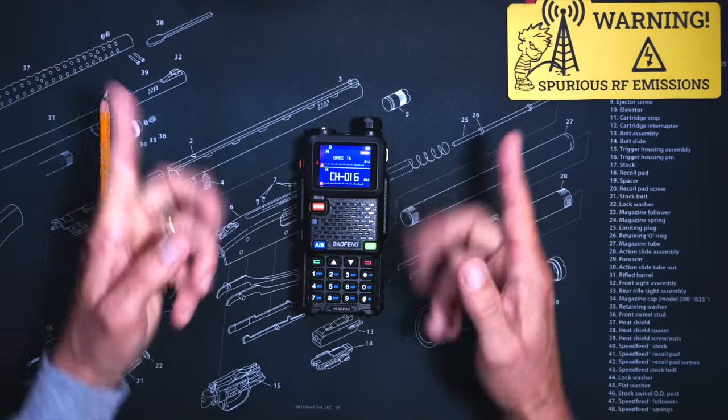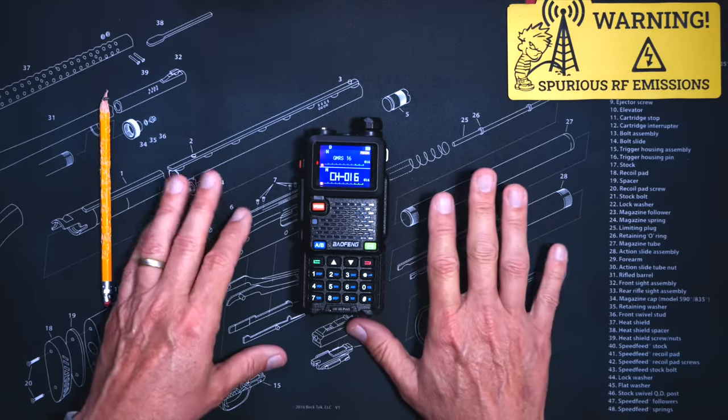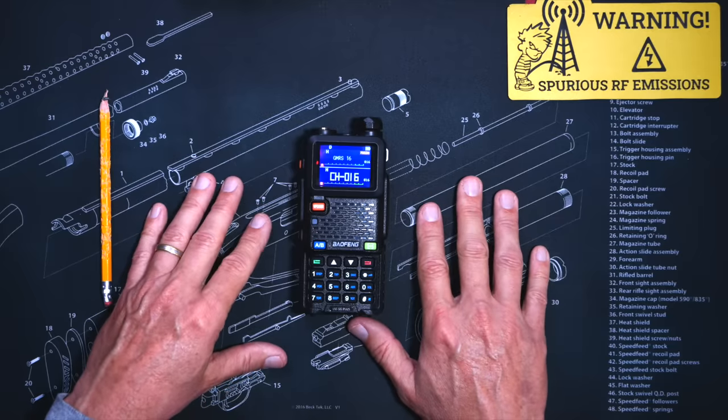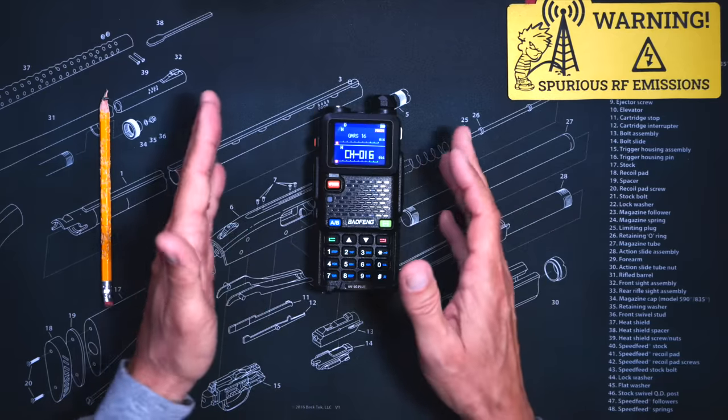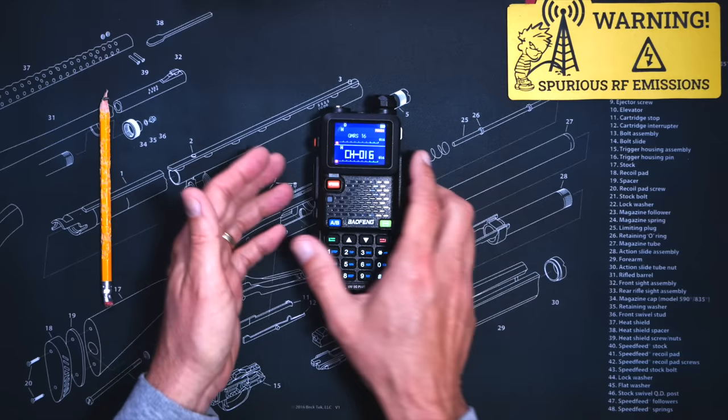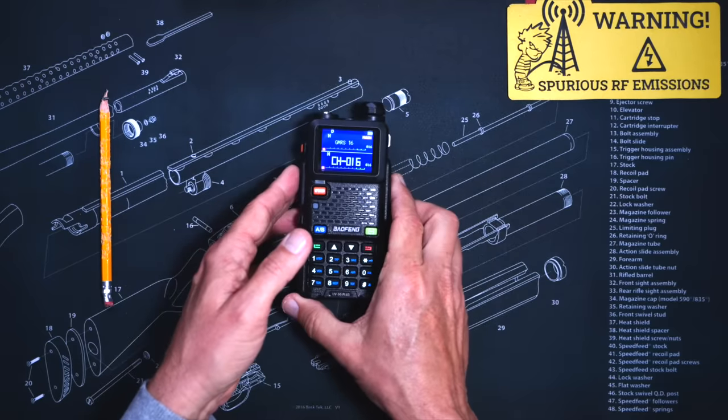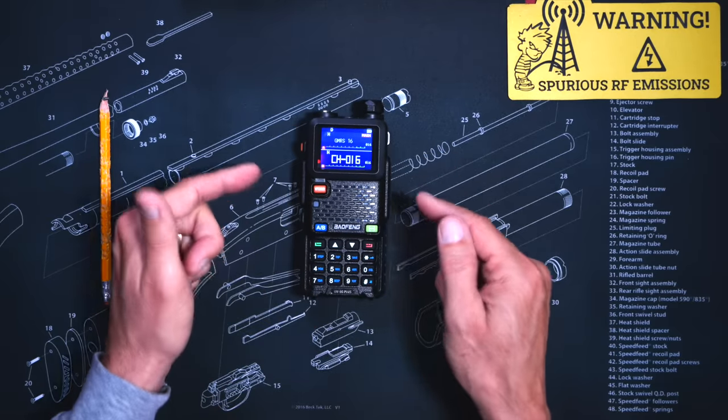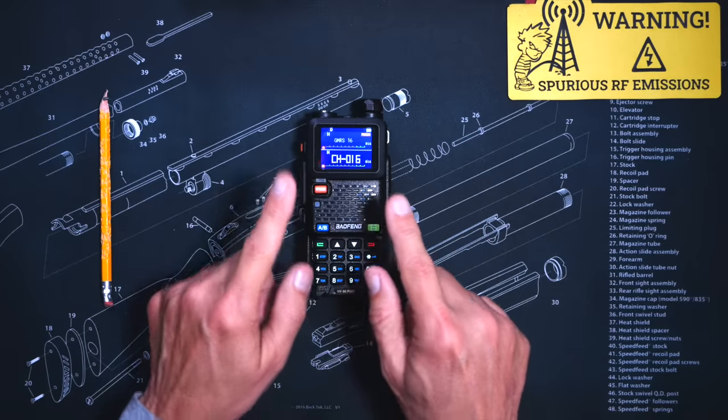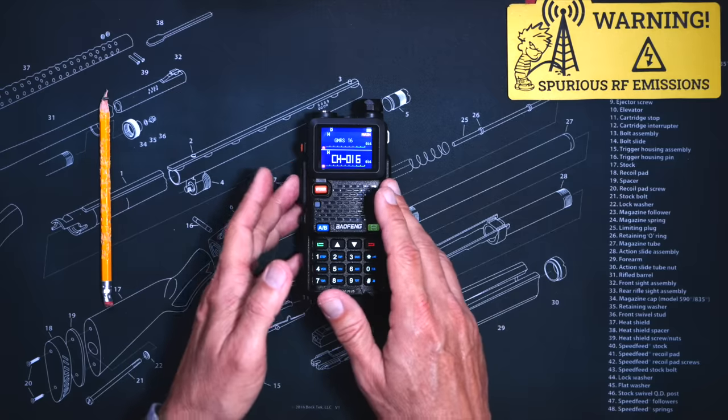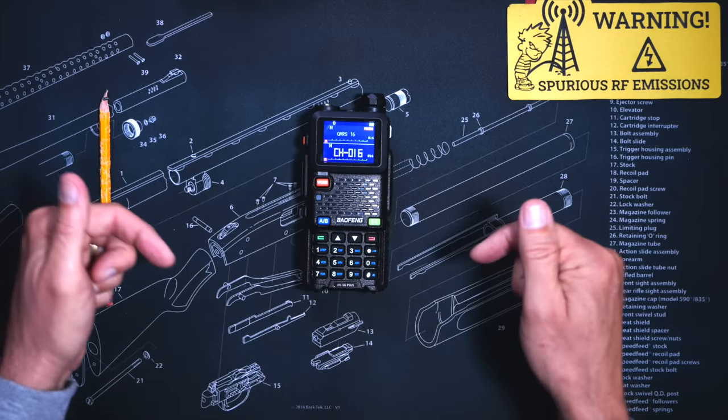The $35 Baofeng UV 5G Plus. Affiliate link below. So allow me to explain a few of the reasons why the UV 5G Plus, manufactured by the Baofeng Corporation of Japan, is my new favorite radio to recommend. First of all, as I alluded to only moments ago, this radio costs about $35 of monies. Affiliate link below.